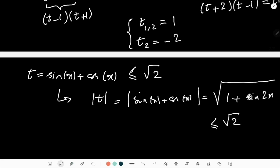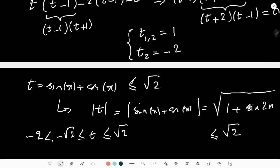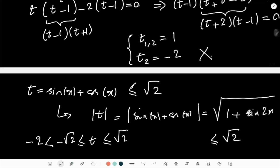if |t| ≤ √2, it means it's always in this interval, right? And that is definitely greater than -2. So this cannot be, of course, in the realm of complex numbers,